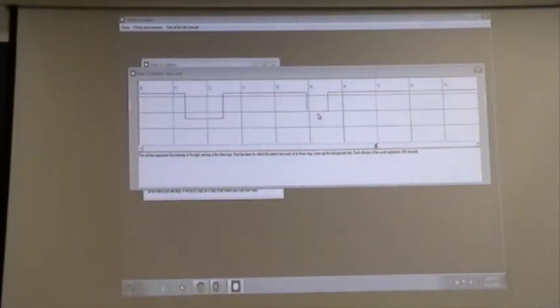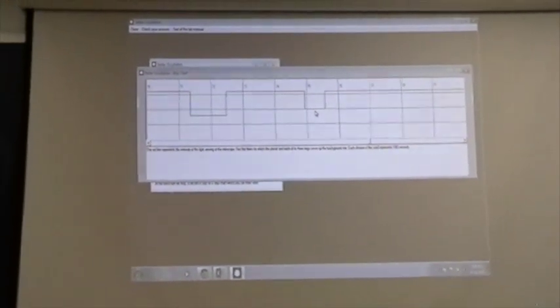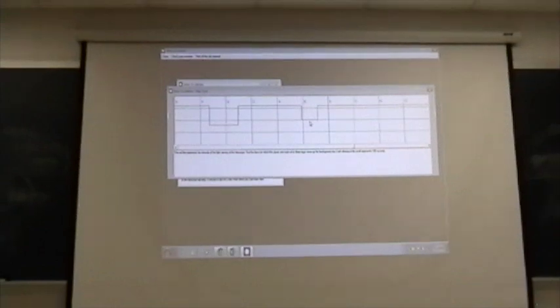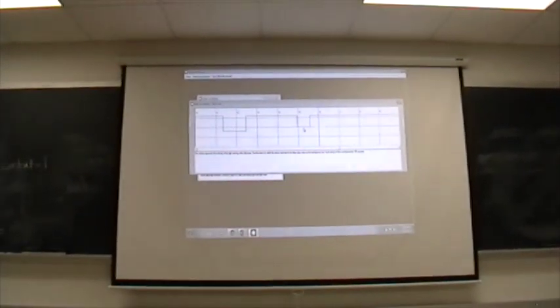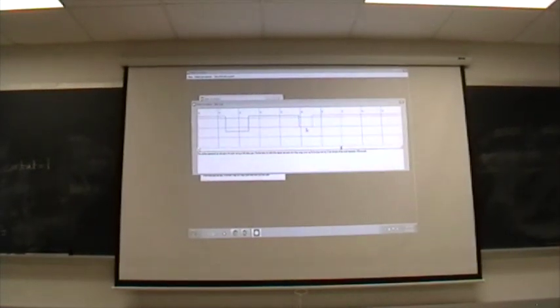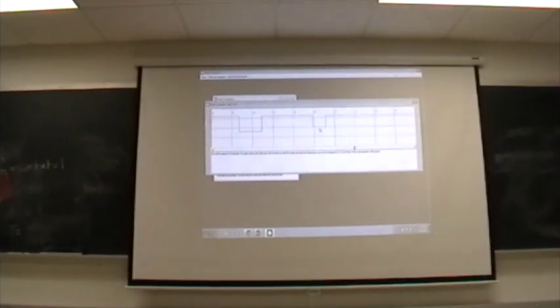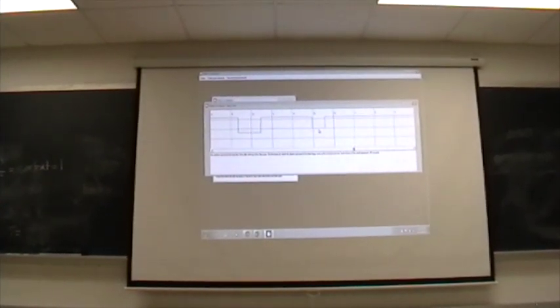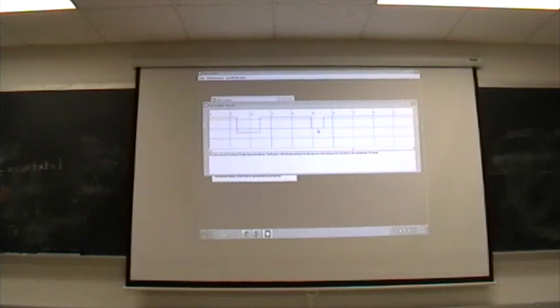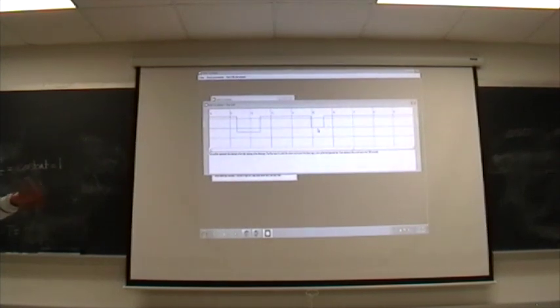Now, using this information on the strip chart, what we can do is we can actually figure out the size of the planet and the inner and outer radii of all of these rings. To do that though, we need to know the relative speed of the planet with respect to us that we consider as the stationary observer on the Earth.